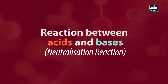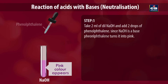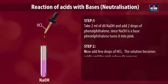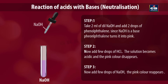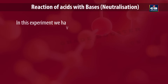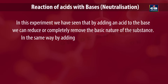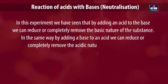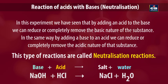Reaction between acids and bases. Take 2 ml of dilute sodium hydroxide and add 2 drops of phenolphthalein. Since sodium hydroxide is a base, phenolphthalein turns pink. Now add a few drops of HCl — the solution becomes acidic and the pink color disappears. Add a few drops of sodium hydroxide again, and the pink color reappears. By adding an acid to a base, we can reduce or completely remove the basic nature. Similarly, by adding a base to an acid, we can reduce or remove the acidic nature. These reactions are called neutralization reactions, and they give rise to a salt and water.